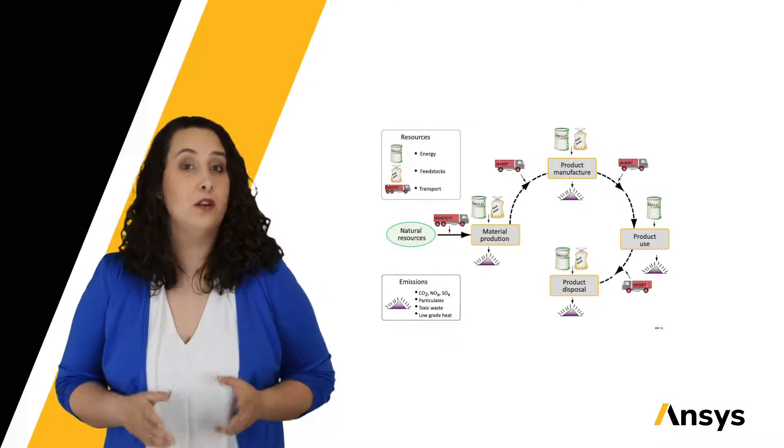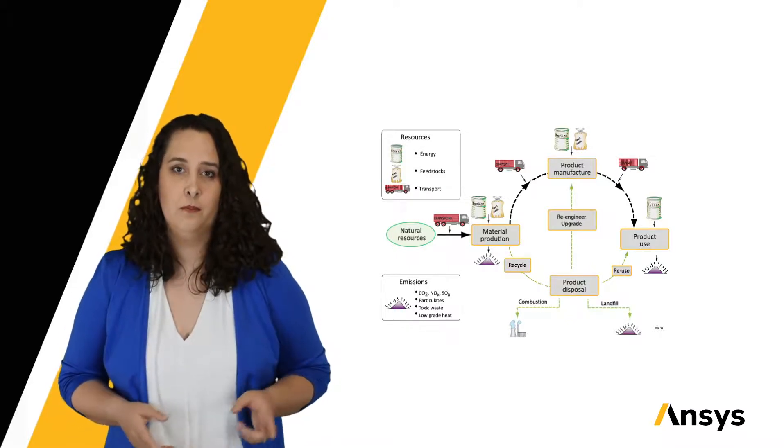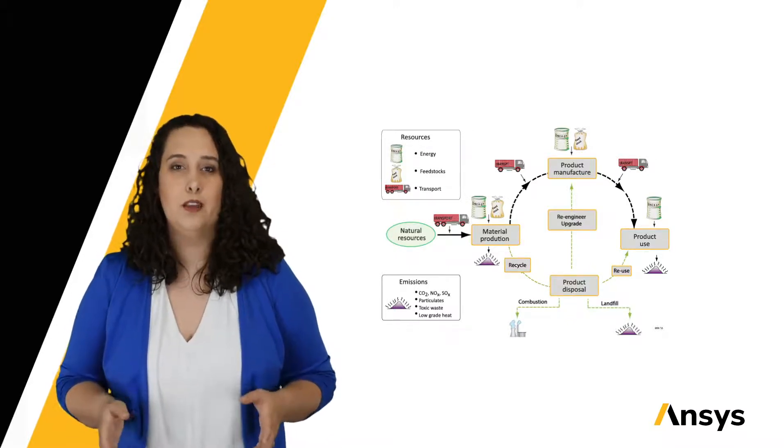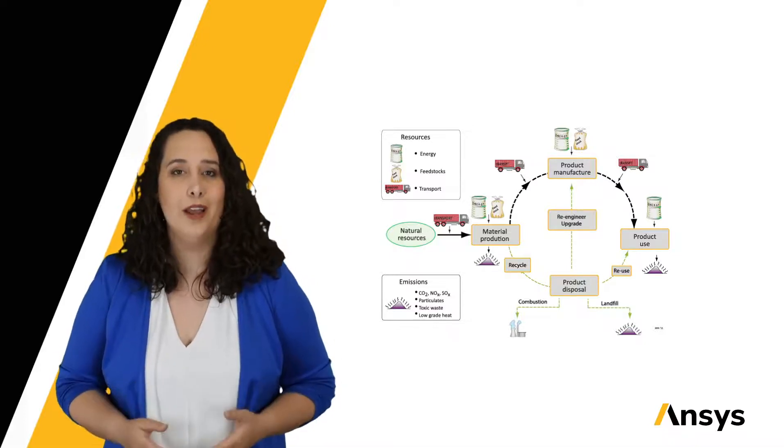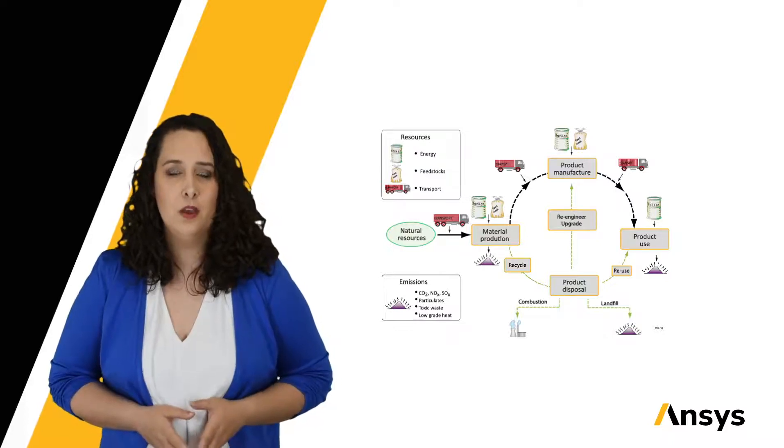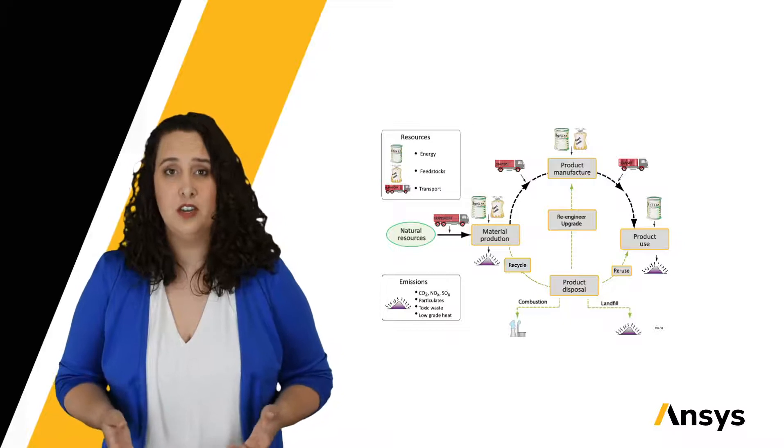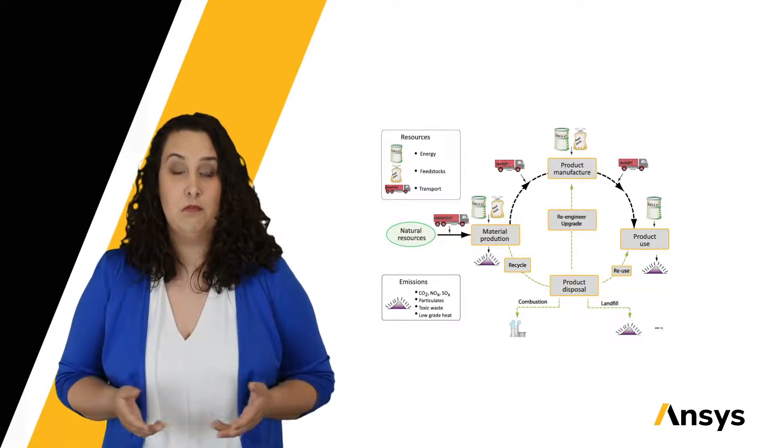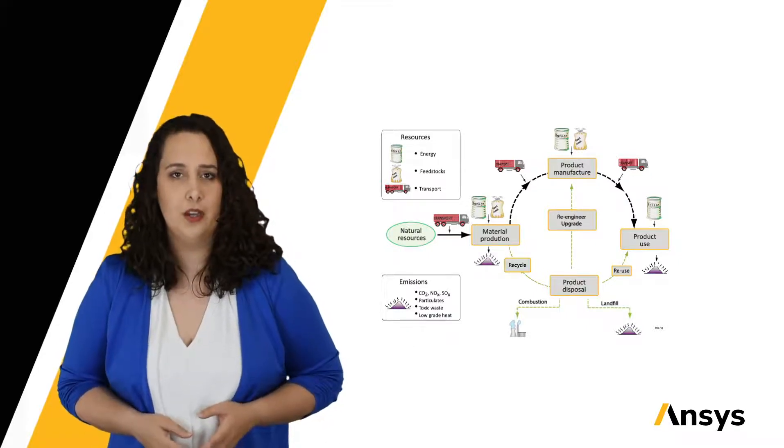We can now see where these three R's fit into our material lifecycle in our diagram here. But before we examine if any of these routes are appropriate to take, we must consider why the product reached end of life in the first place. For example, maybe the product simply stopped functioning as intended.